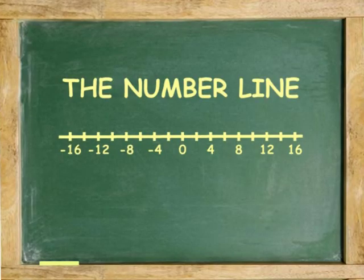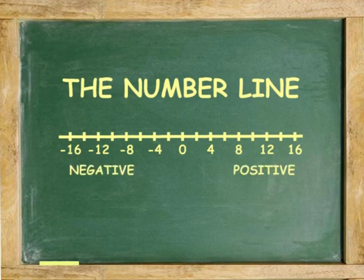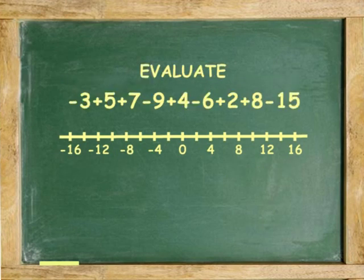Integers can be best understood by the use of the number line. Number lines have a zero in the middle, negative numbers to the left and positive numbers to the right. To use the number line to find answers, start at zero and then move left and right according to whether the expression represents an addition or subtraction. Where the last operation lands, it gives the answer.